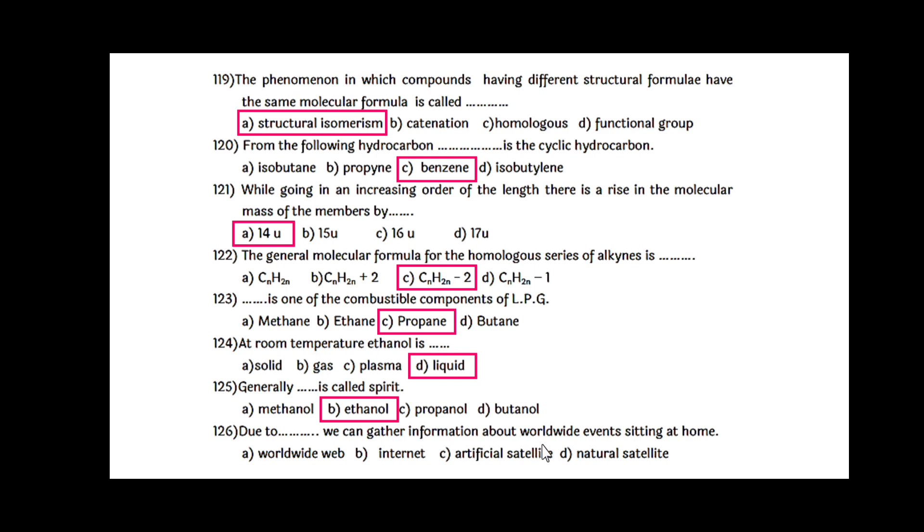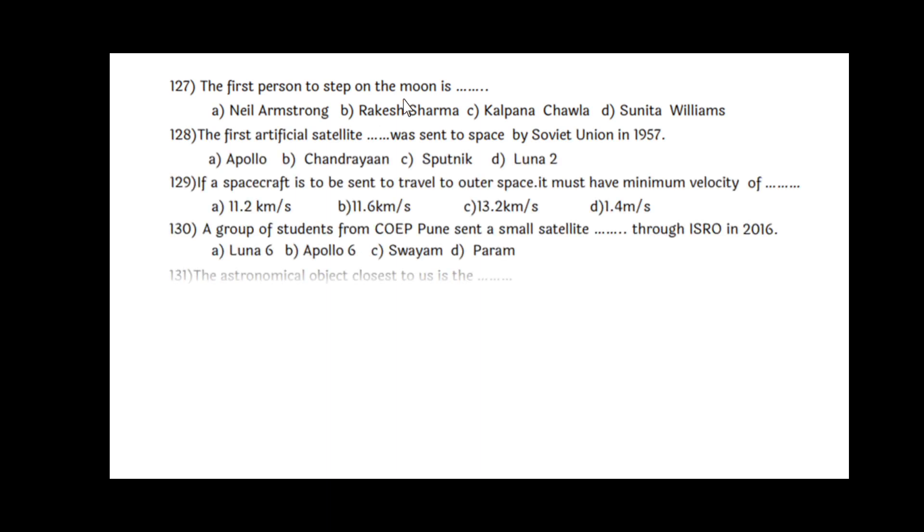Due to internet, we can gather information about worldwide events sitting at home. The first person to step on the moon is Neil Armstrong. The first artificial satellite, Sputnik, was sent to space by Soviet Union in 1957. If spacecraft is to be sent to travel to outer space, it must have minimum velocity of 11.2 km per second. A group of students from COEP Pune sent a small satellite, Swayam, through ISRO in 2016. The astronomical object closest to us is the moon.